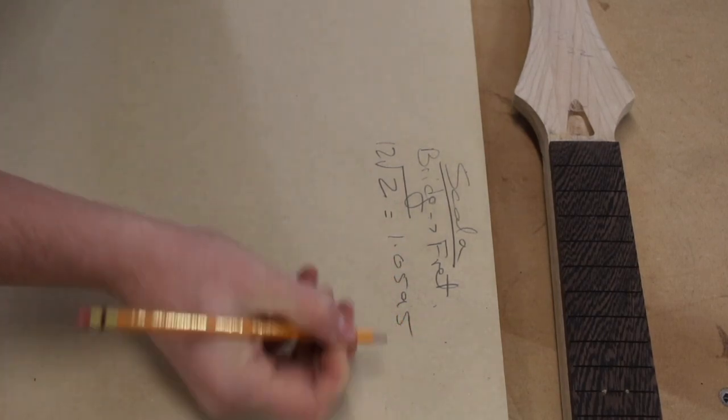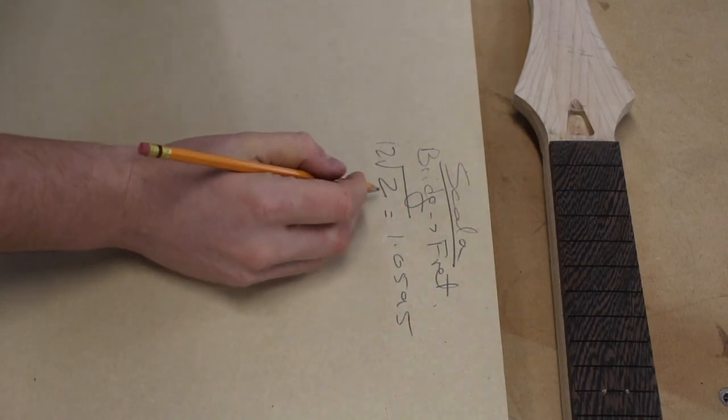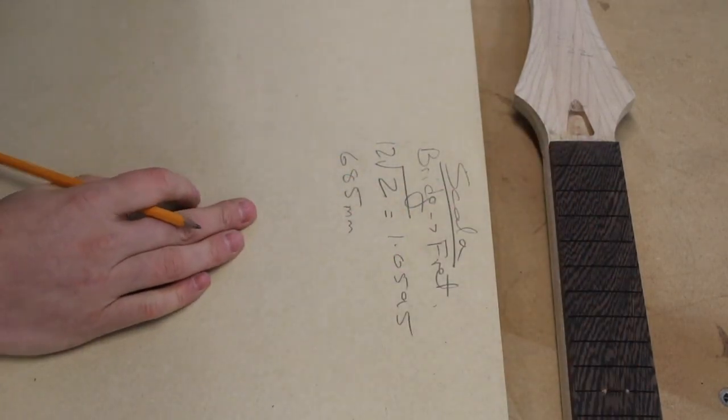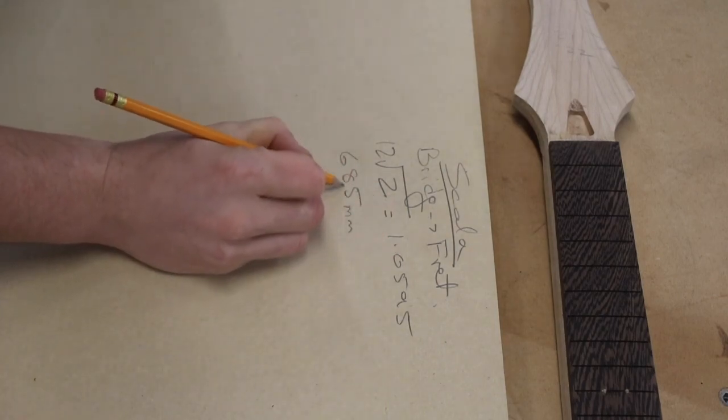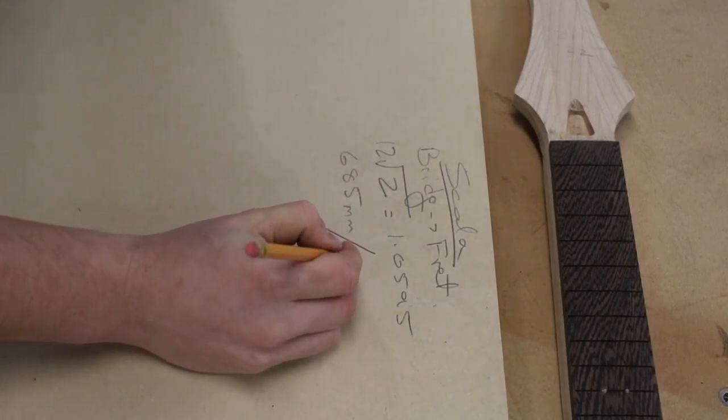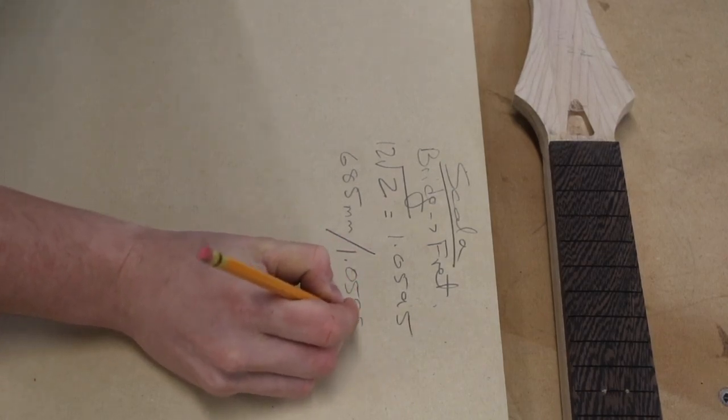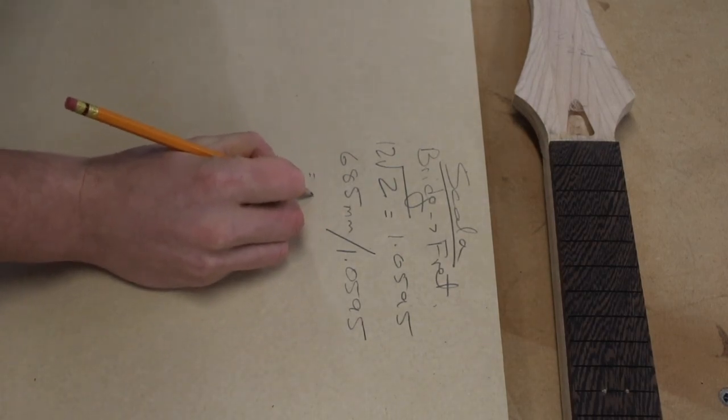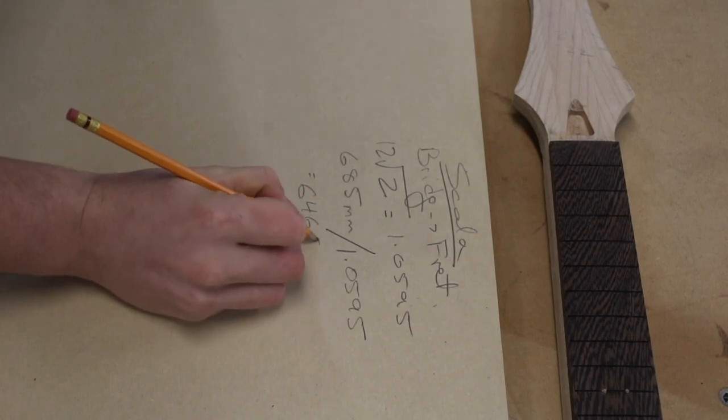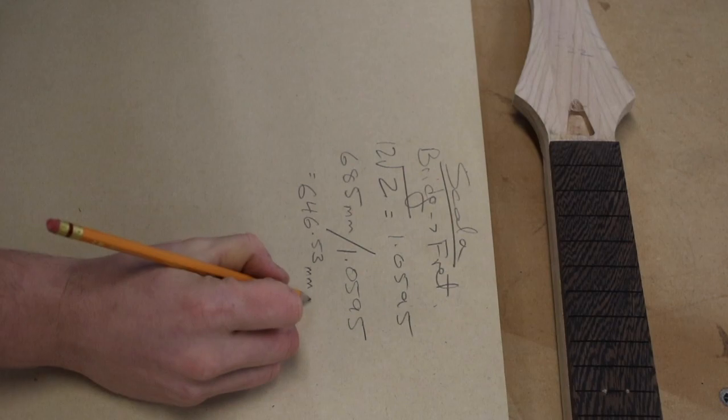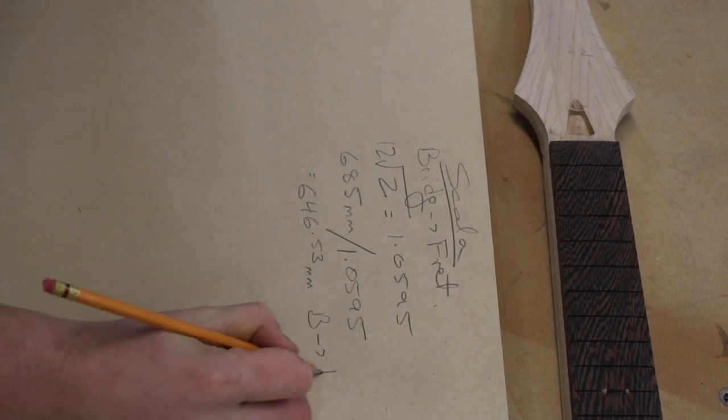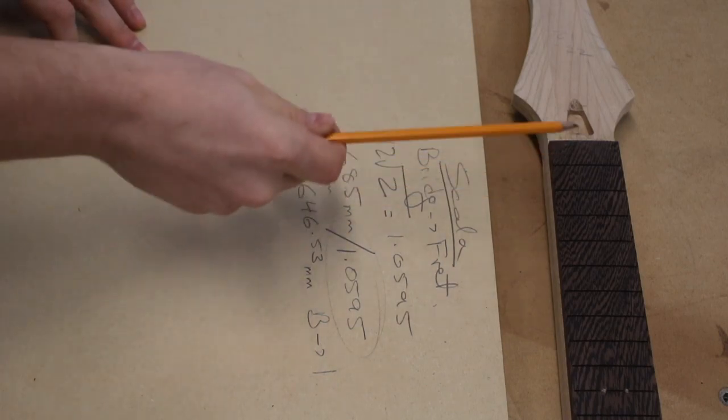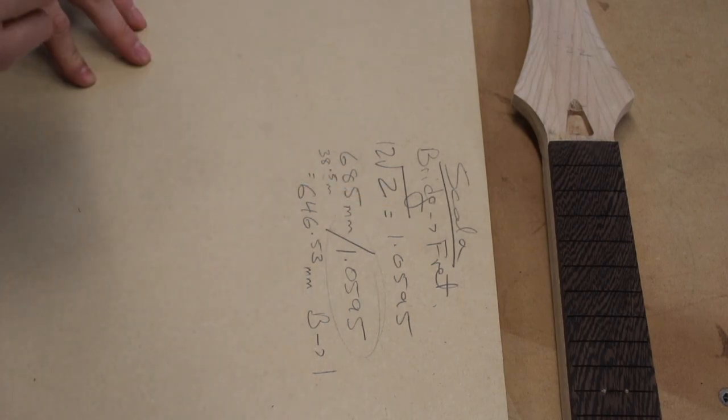The number you get with this is one point, and we're going to use a number of decimal spaces, 0, 5, 9, 5. This is the magic number that you use for dividing across your overall scale length, which is again, in the case of this microtonal guitar, it's 27 inches. It's a baritone, but it's 685 millimeters, divided by 1.0595, you get 646.53. So, that is the distance from the bridge to fret 1. So, my overall scale length minus the new amount is 38.5. That is the distance from my nut to my first fret.